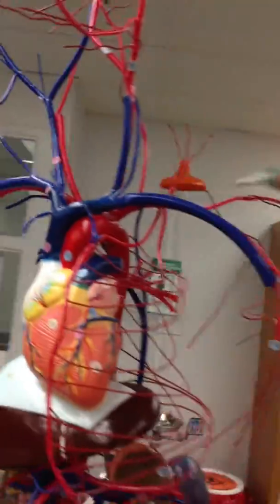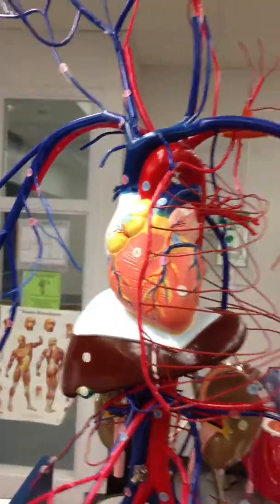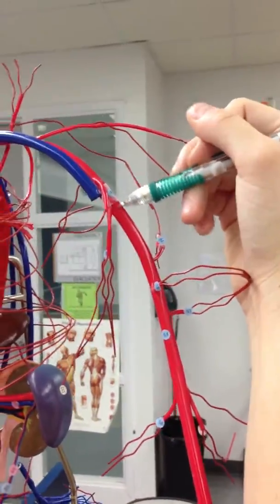The subclavian, as I already showed you, is here behind. The axillary is number 45, right in here at the very end of the subclavian.